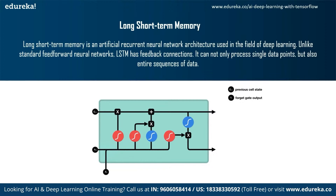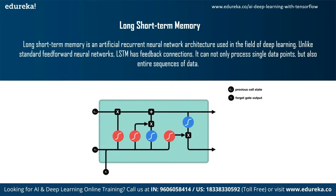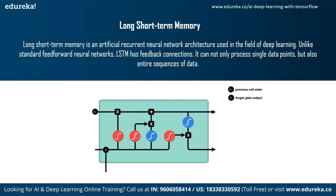The next improvement is Long Short-Term Memory, or LSTM — an artificial recurrent neural network architecture used in deep learning. Unlike standard feedforward neural networks, LSTM has feedback connections and can process not only single data points but entire sequences of data. Moving from RNN to LSTM introduces more control over the sequence, giving better results and the ability to feed longer sequences.